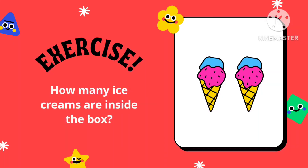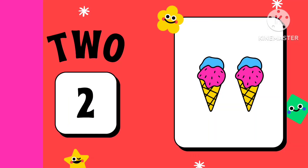How many ice creams are inside the box? Count with me. 1, 2 — T-W-O, 2. There are 2 ice creams.